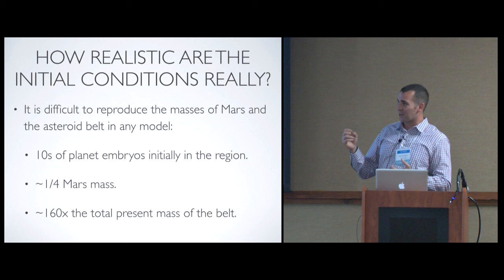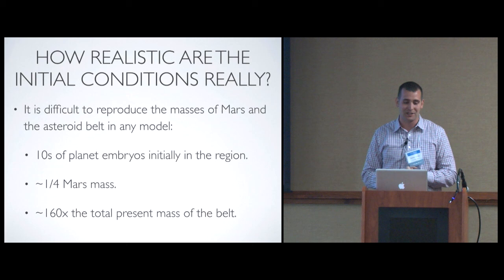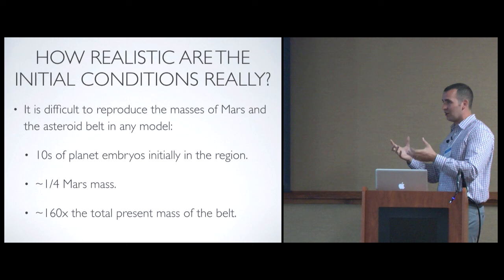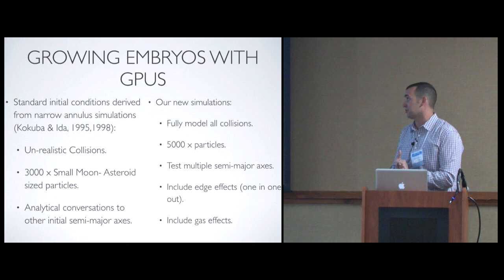And in the asteroid belt, one of those embryos is 160 times the mass of the entire present asteroid belt. And you have tens of these throughout the asteroid belt region. So the question is, in the real solar system, what emerged from the gas disk, the forming terrestrial disk? Did you really have these large moon to Mars size embryos out by the asteroid belt?